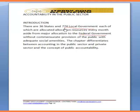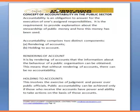There are 36 states and 774 local governments, each of which are allocated resources every month, aside from the major allocation to the federal government, without commensurate provision of adequate social amenities to the public. This chapter differentiates between accounting in the public sector and the private sector, and majorly the concept of public accountability.